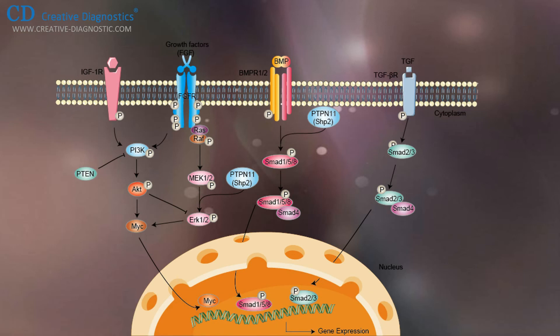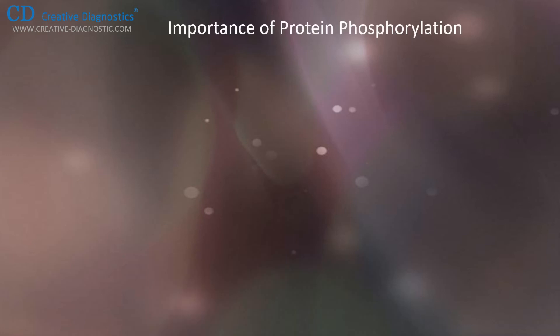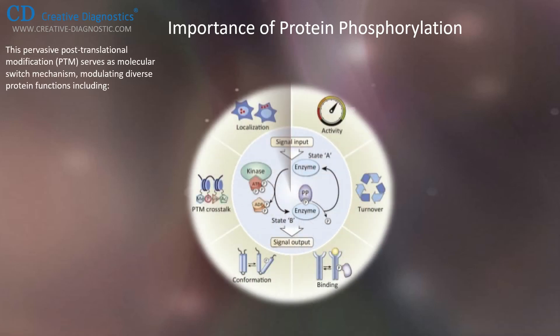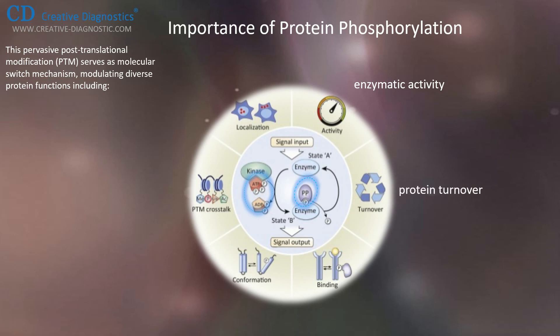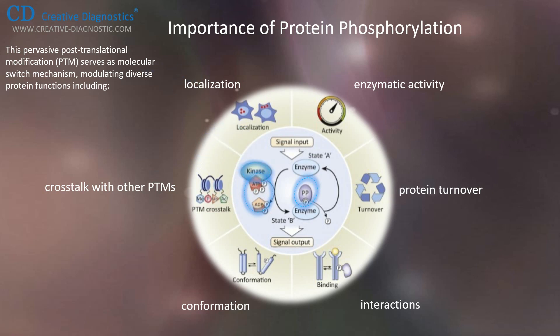All those phosphorylation signaling events will affect the expression of differentiation-related genes in the nucleus. Protein phosphorylation has an important role in essentially all aspects of cell biology. It is characterized by the addition of phosphate donated from ATP and the removal of phosphate from a phosphorylated protein substrate, catalyzed by protein kinase and phosphatase enzymes respectively. This pervasive post-translational modification serves as a molecular switch mechanism, modulating diverse protein functions including enzymatic activity, protein turnover, interactions, conformation, localization, and crosstalk with other PTMs, which in turn regulate broad cellular biological functions. Kinases and their substrates form vast networks of dynamic protein phosphorylation within cells.